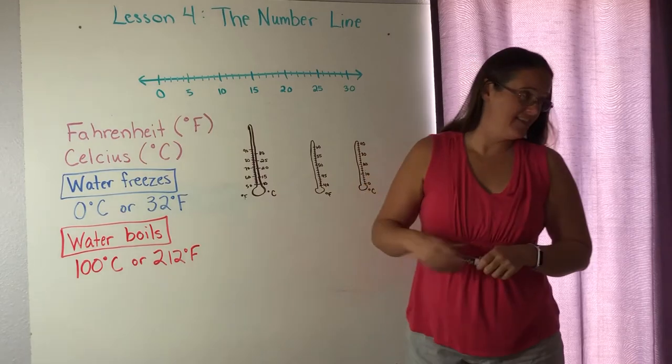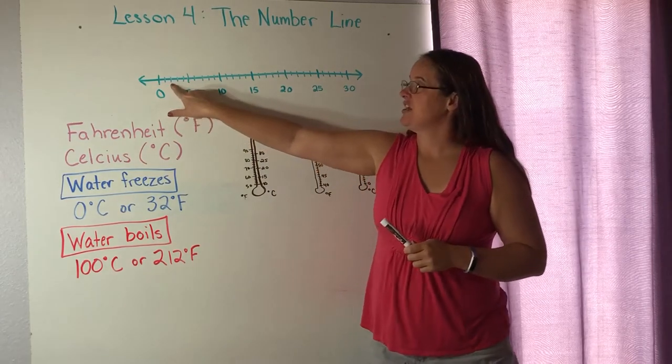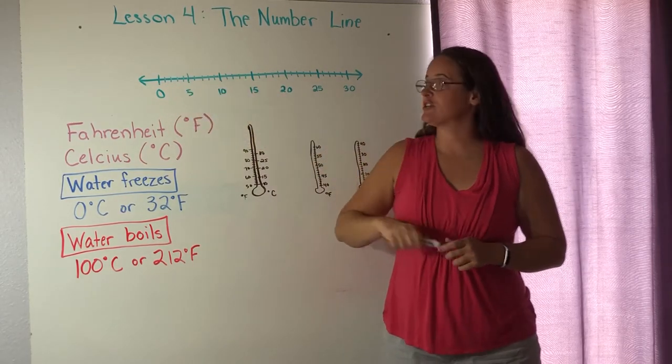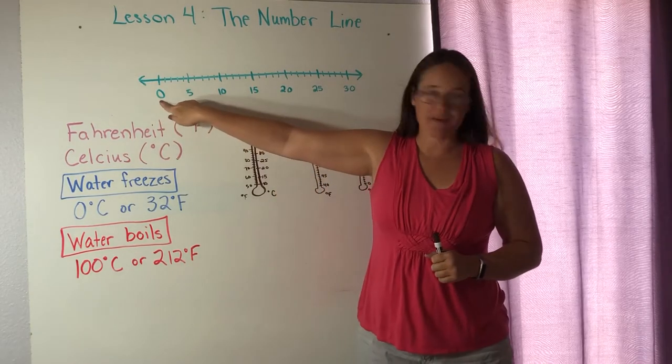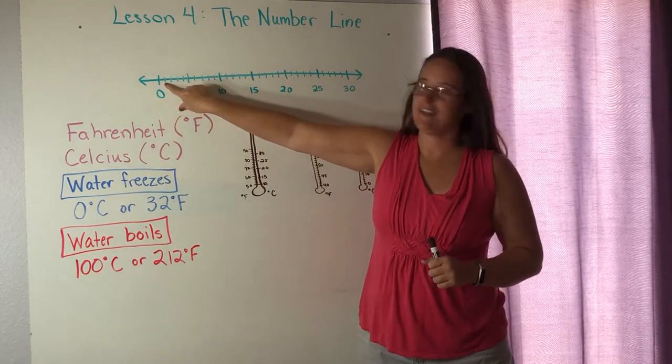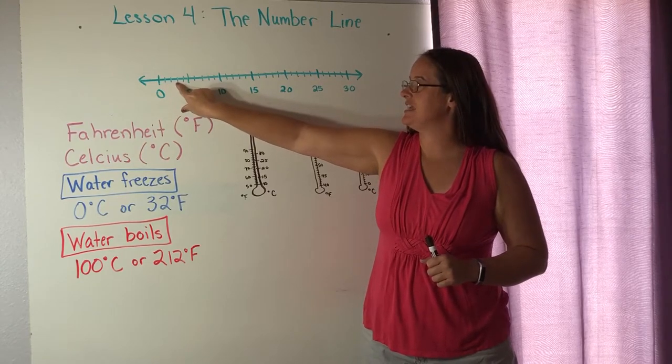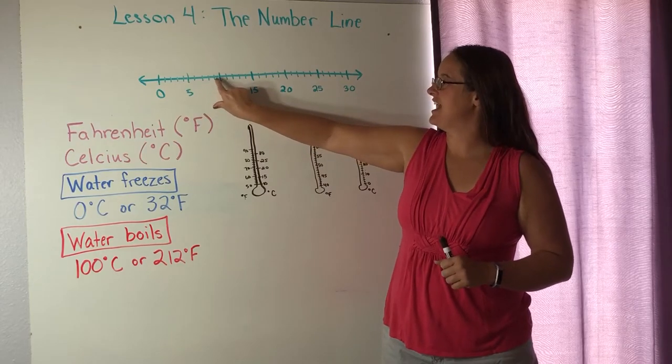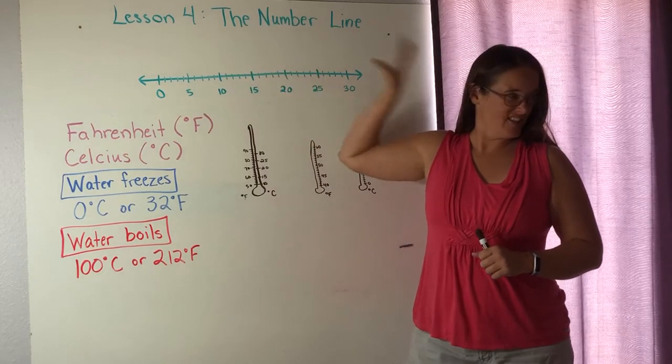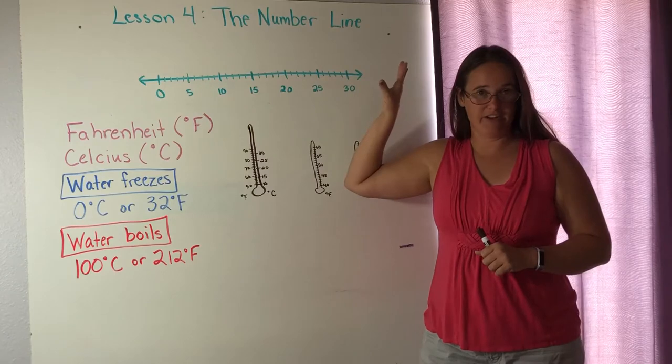But there will be a notch for each number. So this is zero. Dropping my marker here. This is zero. This is one, two, three, four, five, six, seven, eight, nine, ten, eleven, and so on. The whole way up the number line.